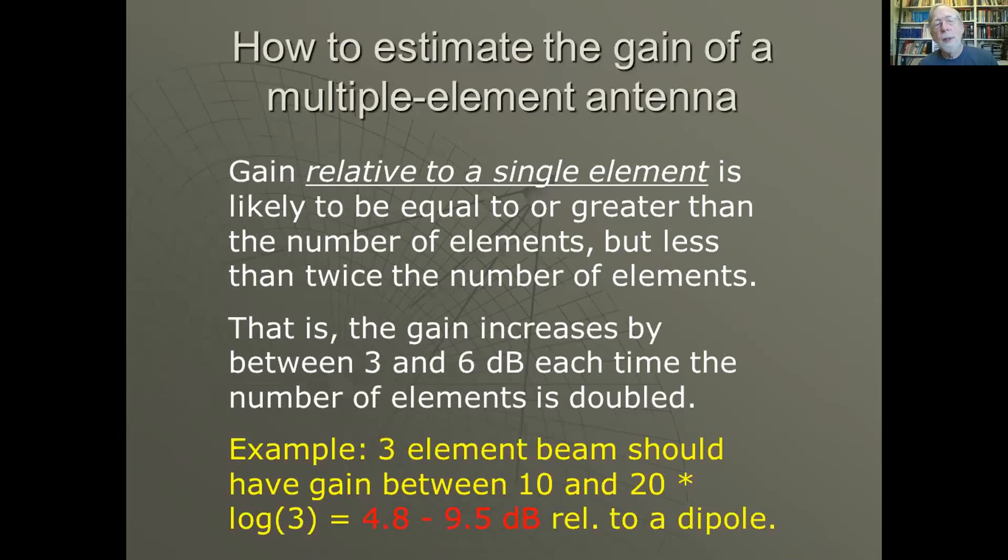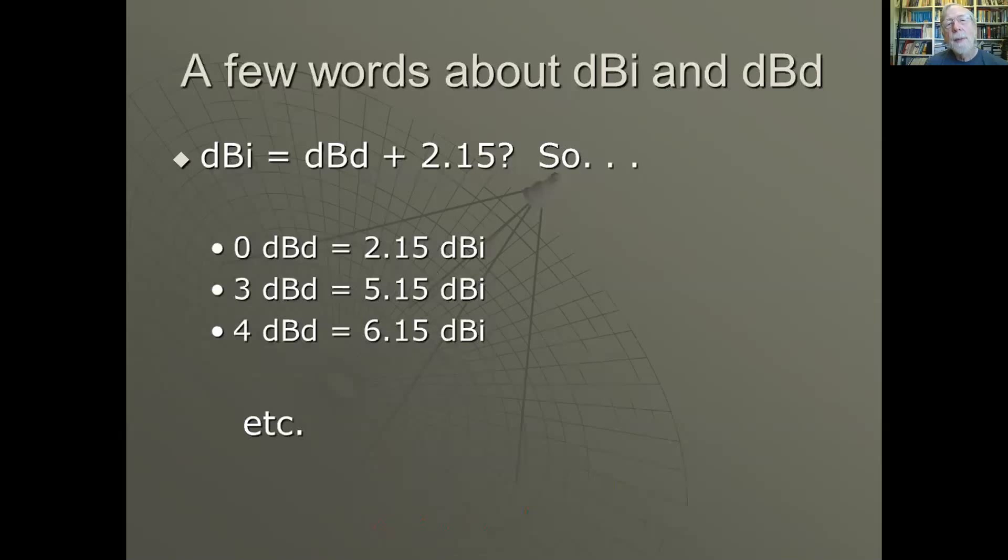Gain relative to a single element - you can usually estimate it as being between three and six dB each time you double the number of elements. That's a good rule of thumb to estimate the gain of an antenna. For example, a three element beam should have between 10 and 20 times log(3) or 4.8 to 9.5 dB relative to a dipole, that is relative to a single element. So we know that a dipole in free space has a gain of about 2.15 dBi.